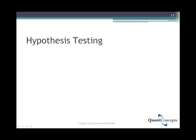Now, time for some statistical jargon. If you've understood the lecture so far, you're already miles ahead in learning hypothesis testing — all we need to do is add the statistical names to the ideas we've just discussed. The null hypothesis is the claim we are trying to test, denoted by H0. In our particular case, we are testing Sam's claim that his long-term average bowling score is 150, so the null hypothesis is that Sam's long-term bowling average is equal to 150.